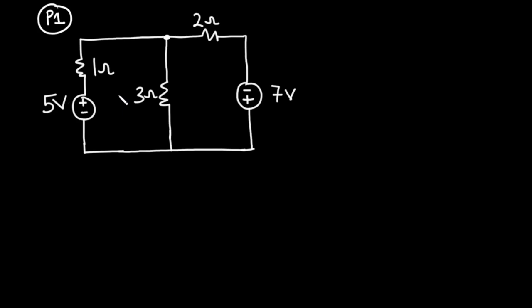To solve this problem we first need to assign currents in the circuit. Current always flows from a higher potential to a lower potential, so we assign current i moving from the higher potential and returning to the lower potential, flowing towards the junction. At the junction the current splits: i1 flows in one direction and the rest, i minus i1, flows in the other direction.